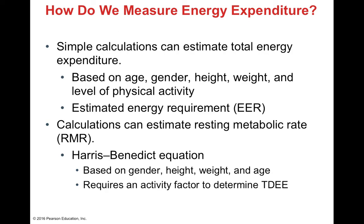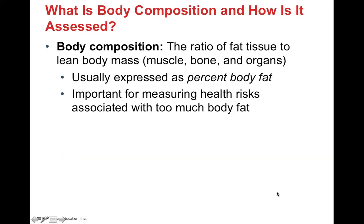We can use fairly simple calculations to estimate total energy expenditure based on multiple factors including your age, gender, height, weight, and level of physical activity. This allows us to estimate your Estimated Energy Requirement, or EER. We can also estimate your resting metabolic rate, or RMR, using the Harris-Benedict equation. The HB equation is based on gender, height, weight, and age, and also requires an activity factor — how much activity you're estimated to be doing daily — to determine your TDEE, your total daily energy expenditure.